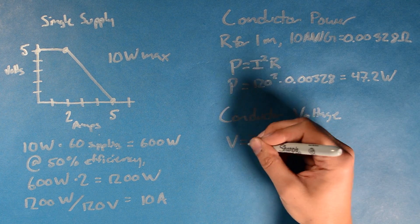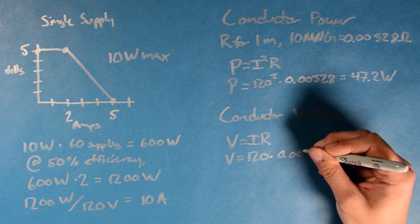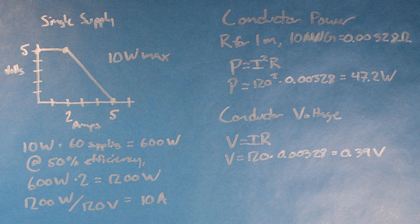The voltage drop on the wire is calculated as well. Using Ohm's law, we'd expect to have about 0.39 volts across the wire.